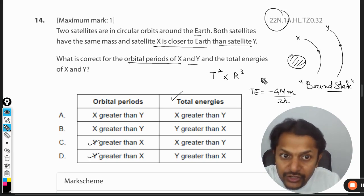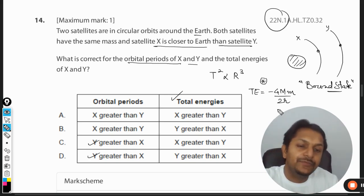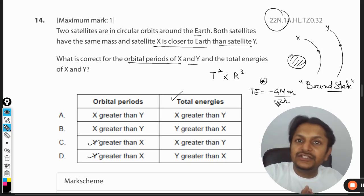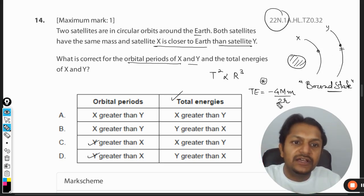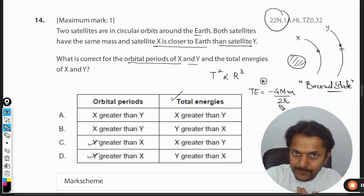This is not given in the data booklet, and I don't believe that they will be giving it ever, so you can just remember it. Now this total energy is always negative - be very careful. Now for the case of Y, the R value is bigger, so the denominator becomes bigger. It means GMm by 2R value is smaller.